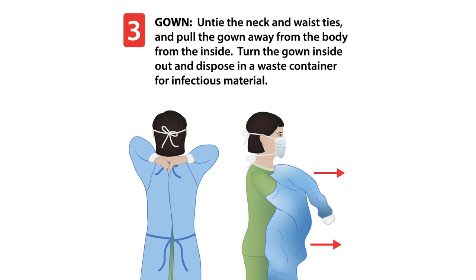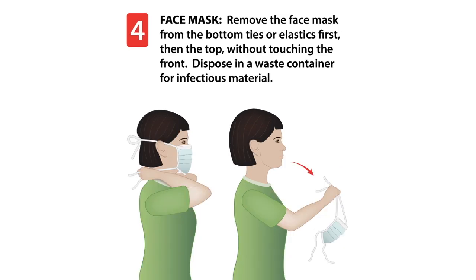When removing the gown, ask someone to untie the neck and waist ties — that person should have clean gloves. If untying yourself, hand sanitize first. Pull the gown away from the body from the inside out, turning it inside out, and dispose of it in the infectious waste container. The key is not to touch the front of the gown, which may have invisible viral splashes. Hand sanitize again after gown removal.